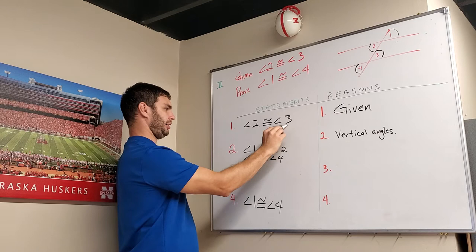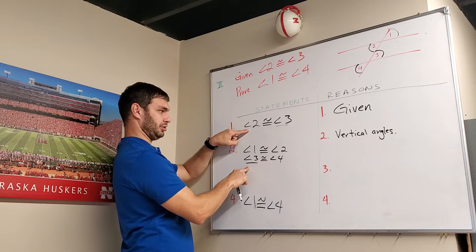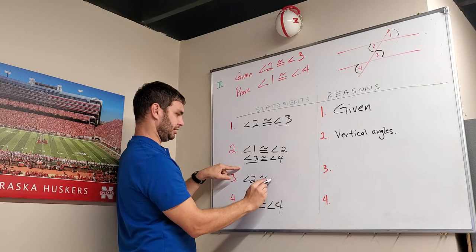Here, angle 3 is congruent to angle 4, and angle 3 is congruent to angle 2. So if I replace this 3 with a 2, since they're both congruent to each other, 4 is congruent to 3, 2 is congruent to 3, I'm going to say that angle 2 is congruent to angle 4. And that was by substitution.